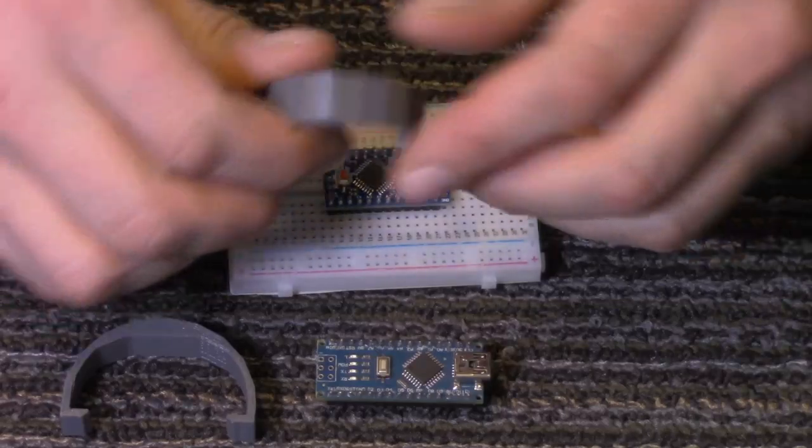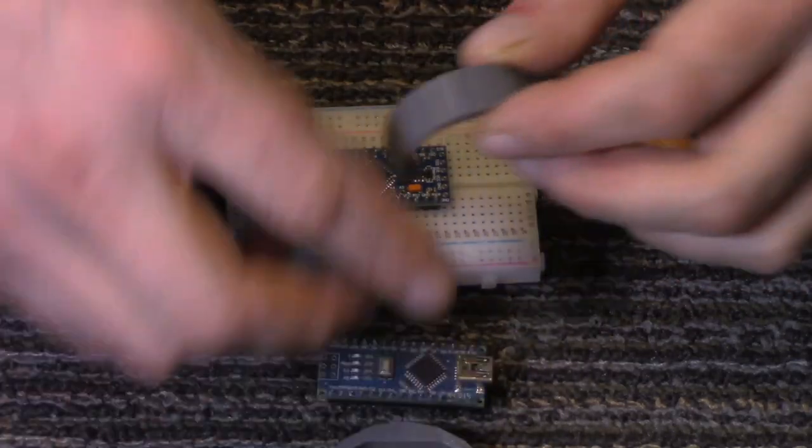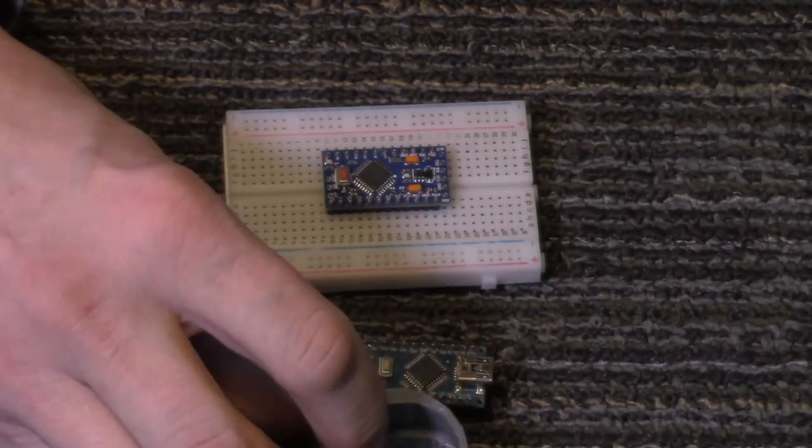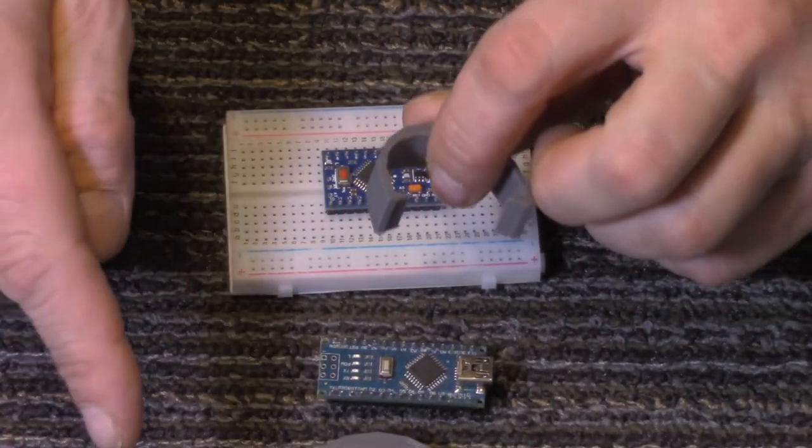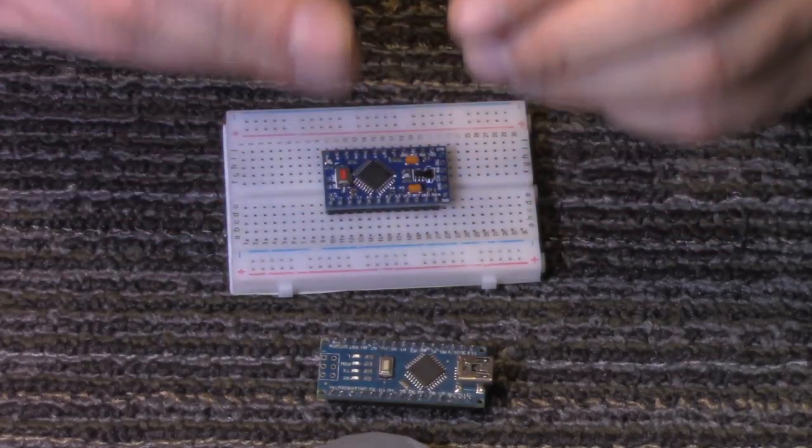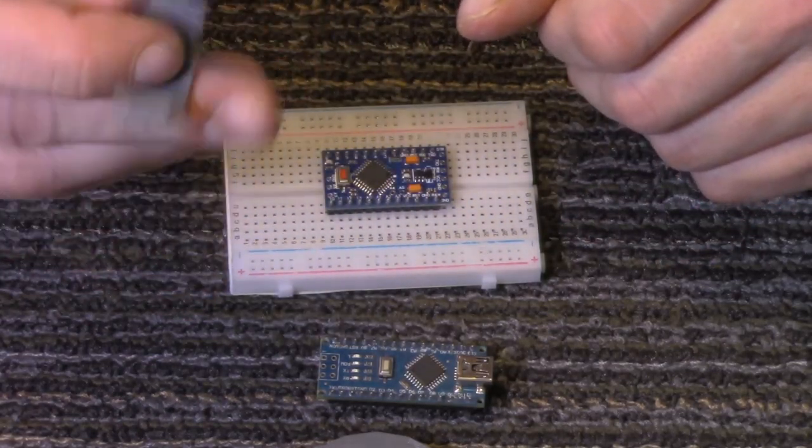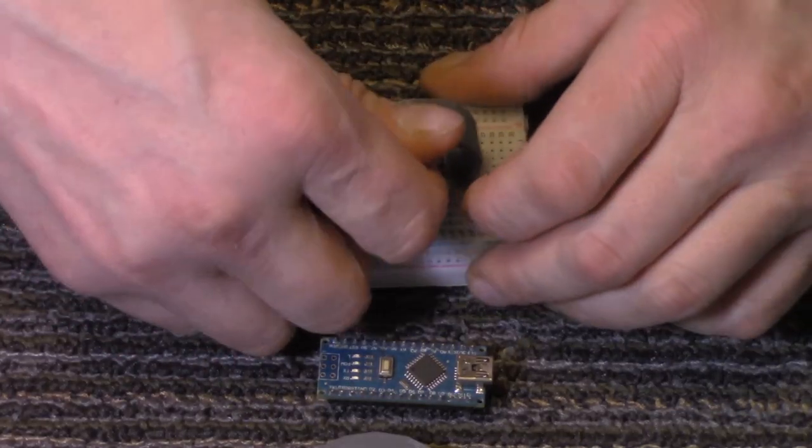So, I came up with these. I've got one for the Nano here and the Pro Mini. They're the same thing, just slightly different sizes. Look in the description below. You'll find a link. These are on Thingiverse. You can download it, print it yourself. These print in like 10 minutes, super quick to print.